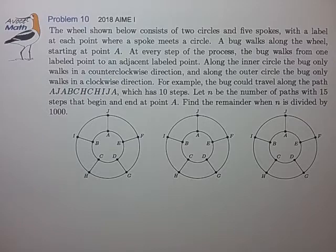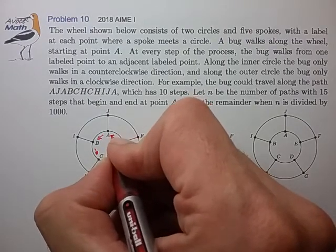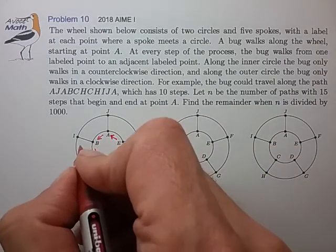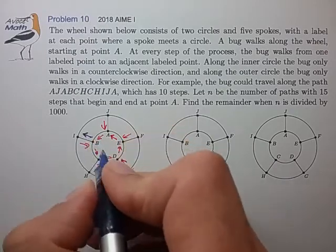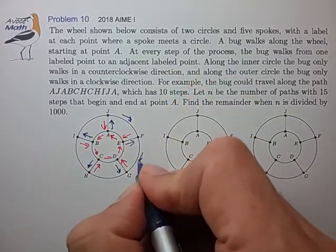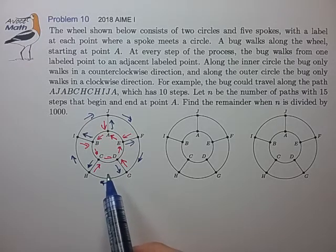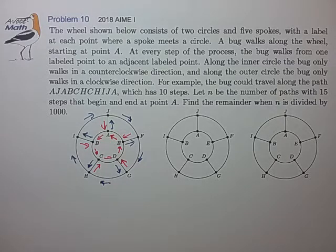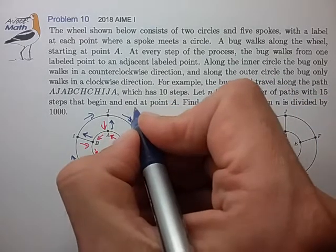So let's try to diagram the types of moves that we need to consider. Along the inner circle, we're always moving in a counterclockwise direction. We could also move inward along the spokes. And along the outer circle, we're always moving in a clockwise direction. When I first did this problem, I counted these as four distinct types of moves, and that was a very messy counting task. But when you stare at this problem more carefully, you may notice that you only need to consider two types of moves: the red type of move, which I'll call a type 1 move, and the blue type of move, which I'll call a type 0 move.